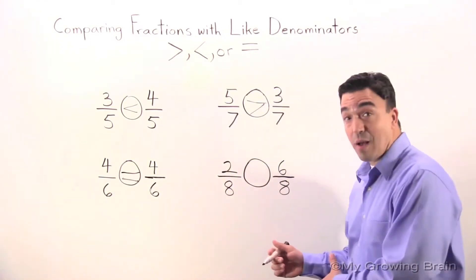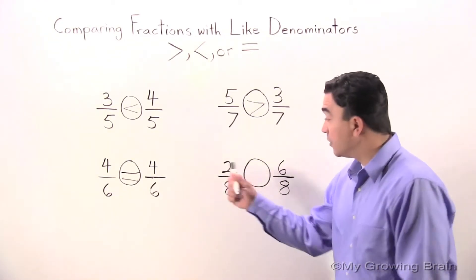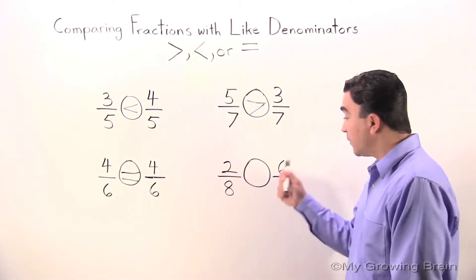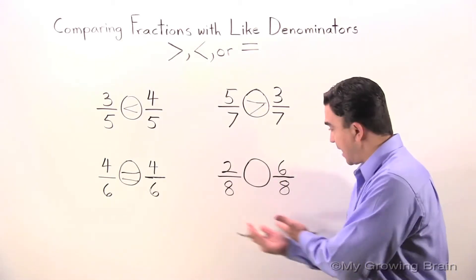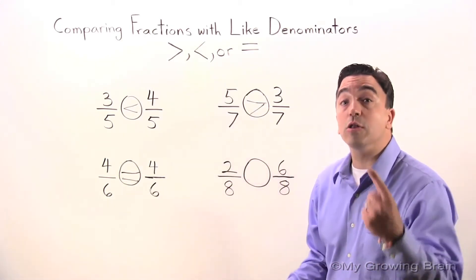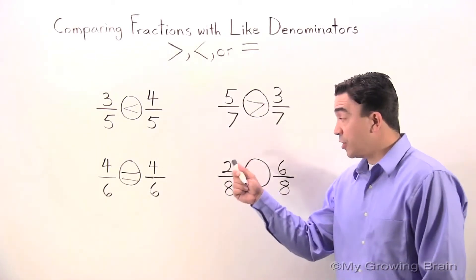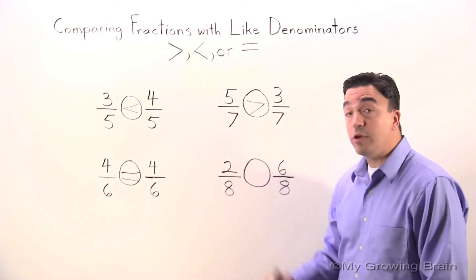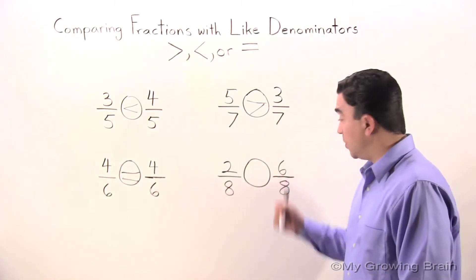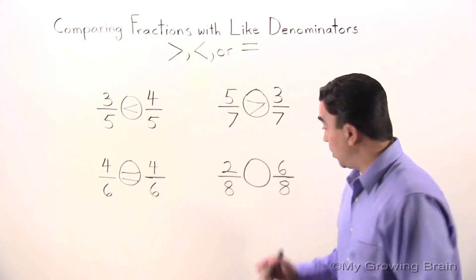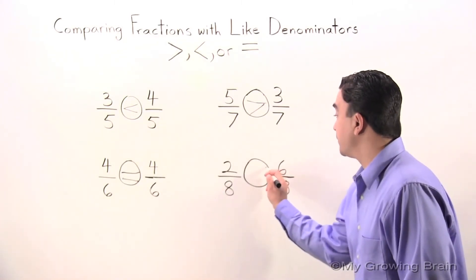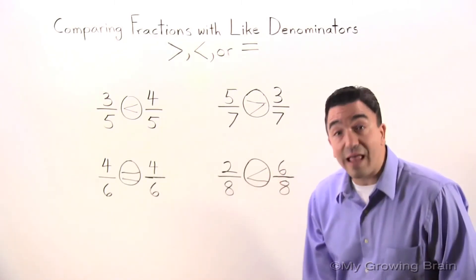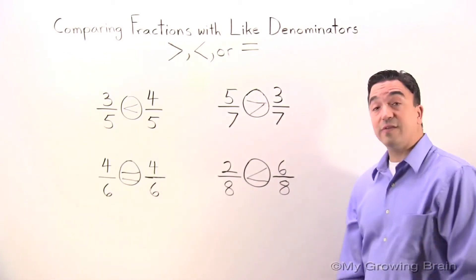Now let's go to the last problem. Are you ready? Two-eighths. Six-eighths. Once again, like denominators - look at the numerator. The numerator two and the numerator six. We all know that numerator two is smaller than numerator six. Therefore, two-eighths is less than six-eighths.